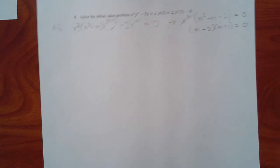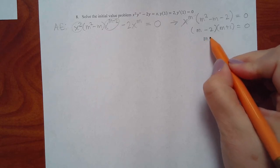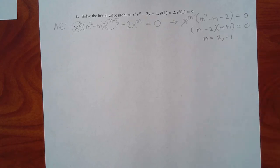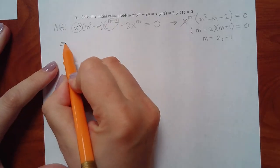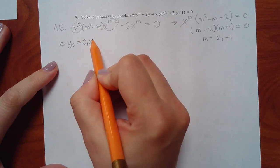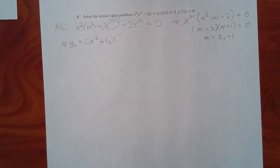Factoring m squared minus m minus 2: factors multiply to give negative 2 and add to give negative 1, giving (m minus 2)(m plus 1). So m equals 2 and m equals negative 1 — two distinct real roots. Using the Cauchy-Euler distinct real roots formula: yc equals c1·x squared plus c2·x to the negative 1.